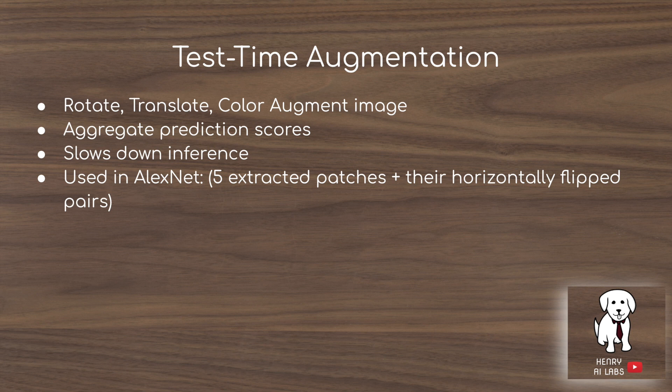Another consideration is test time augmentation. This isn't suitable for applications needing fast inference, but to increase accuracy you can augment the image several times and aggregate predictions across the augmentations. For example, AlexNet randomly crops five 224×224 patches, horizontally flips them all, and aggregates predictions across these ten pairs.